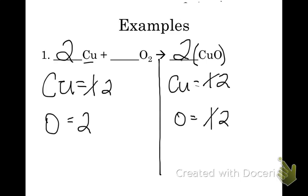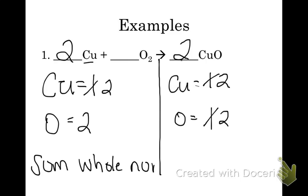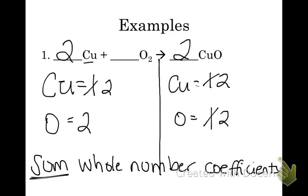Now we have a balanced chemical equation: 2Cu plus O2 produces 2CuO. One question you might be asked is to take the sum of the whole number coefficients. The sum means we're adding, whole number meaning it won't be a half or a third, and the coefficients are just the big numbers in front. So add up the coefficients: I have 2, then in front of oxygen there's nothing listed — so it's an imaginary 1 — and then 2 in front of CuO. So it's 2 plus 1 plus 2, giving a sum of 5.